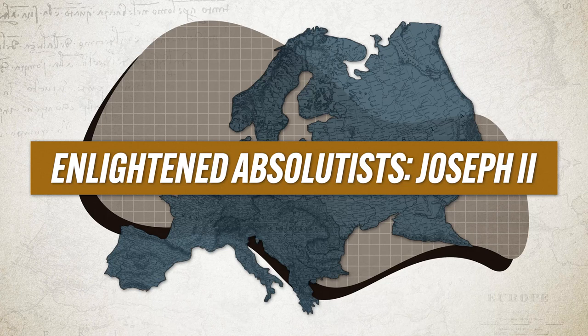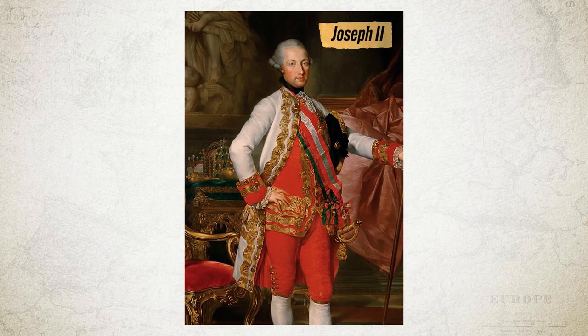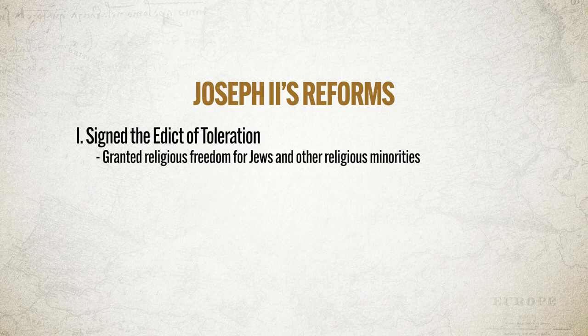Joseph II of Austria was another enlightened absolutist who sought reforms in his state. He enacted several royal decrees, which included the following: first, he signed the Edict of Toleration, which granted religious freedom for Jews and other religious minorities; second, he increased the freedom of the press; and third, he put strictures on the power of the Catholic Church. All that was pretty enlightened, but unfortunately for Joseph, he enacted these reforms very fast without consulting the nobility or the clergy. Because they were displeased, Joseph's reforms led to significant domestic turmoil during his reign.